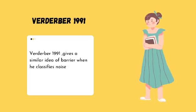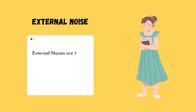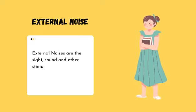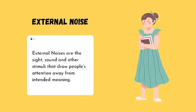How are you? Into three kinds, such as external, internal, and semantic noise. External noise are the sight, sound, and other stimuli that draw people's attention away from intended meaning.